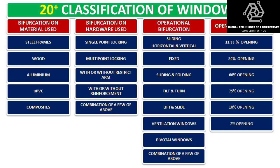This brings us to classification by percentage opening. Sometimes you get 30% opening, sometimes 33.33%, sometimes 50%, sometimes 70%, and in the case of a sliding folding window you get 100% opening. We also have a pivotal window, which has a central pivot either vertical or horizontal. Depending on various observations, a designer can classify windows into many segments.